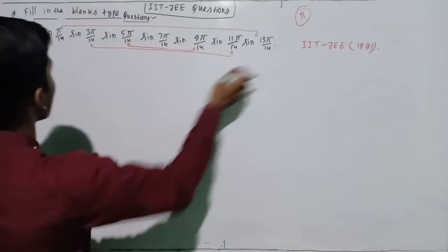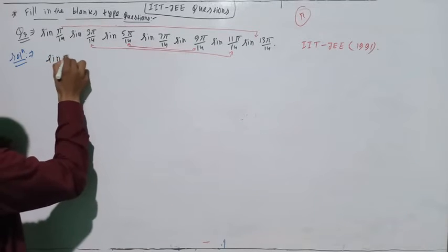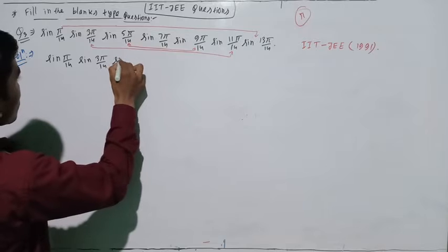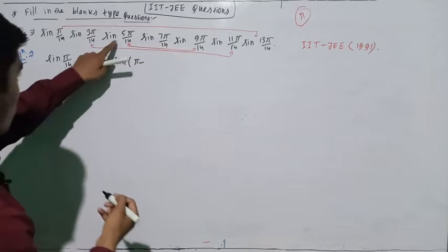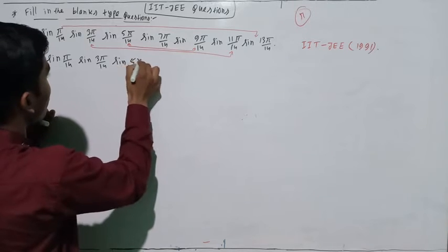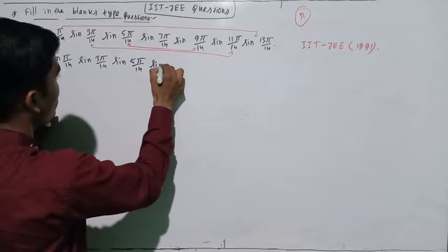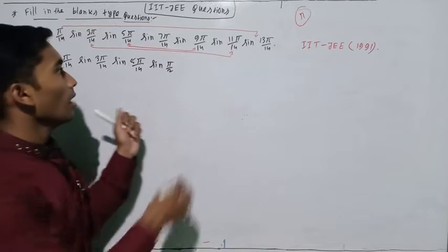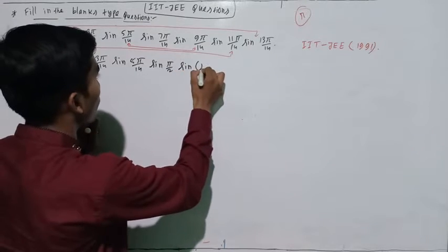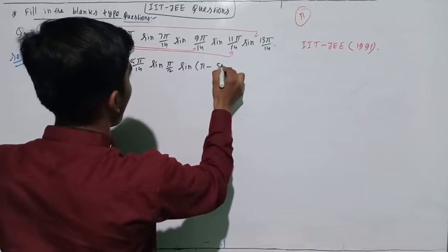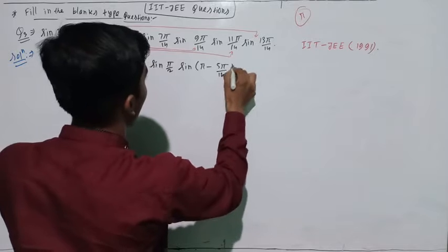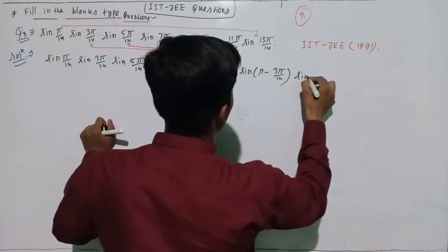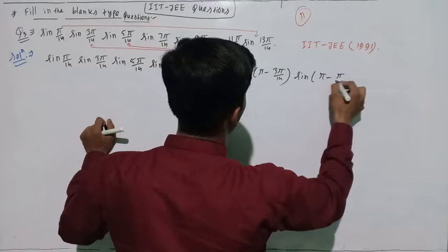It will be this sine and this — it will remain sine of pi by 14, sine of 3 pi by 14. And this can be converted: your sine of pi minus something will also be the same. And it will be sine of pi by 2. This term has been given to confuse you. And this term will convert to sine of pi minus pi by 14. Again, it will be sine of pi minus 3 pi by 14, and sine of pi minus pi by 14.